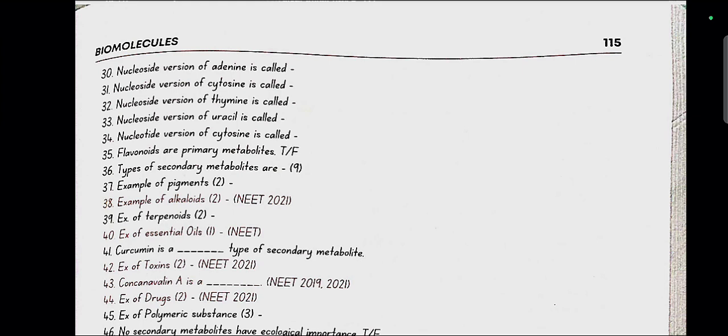Flavonoids are primary metabolites. No, false. Types of secondary metabolites are alkaloids, flavonoids, rubber, essential oils, antibiotics, colored pigments, scents, gums and spices.